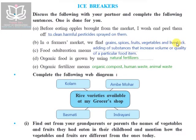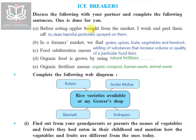Livestock here refers to cattle and different types of animals, or eggs and products related to them. Food adulteration means adding substances that increase the volume or quality of a particular food item. Food adulteration is done just to increase the volume of any particular type of food.